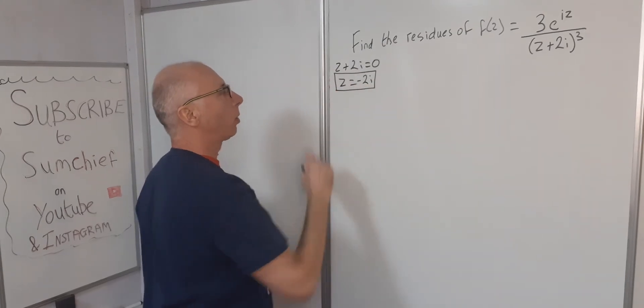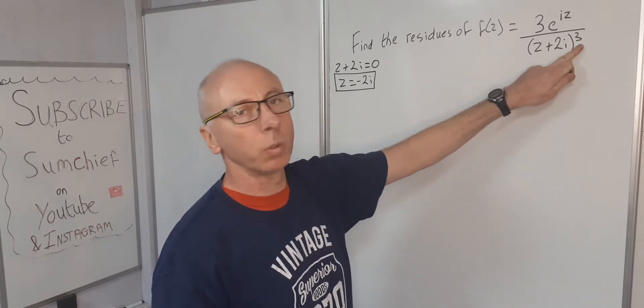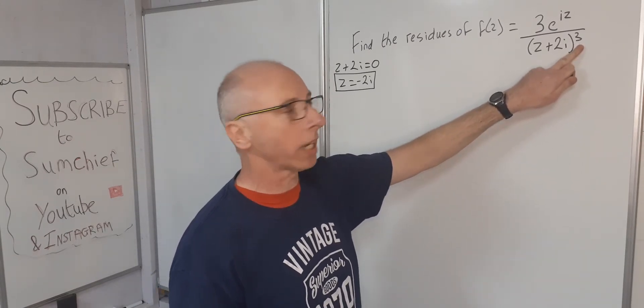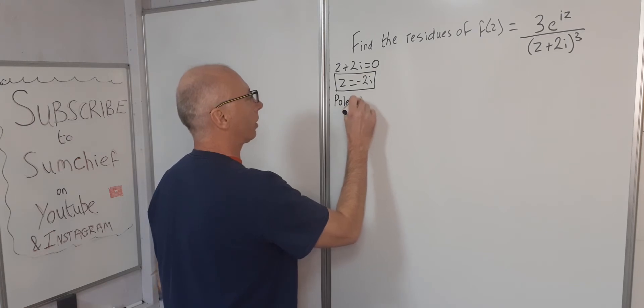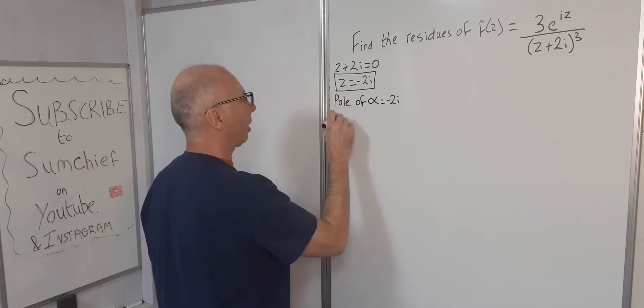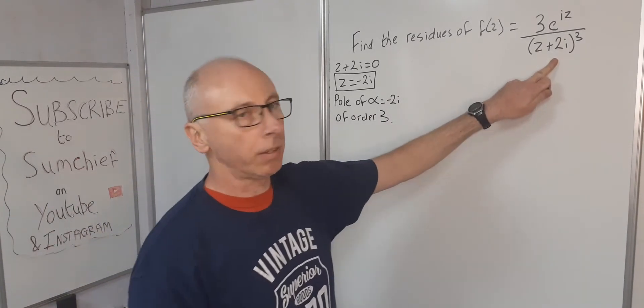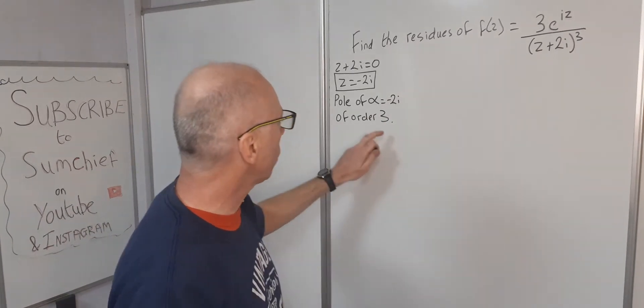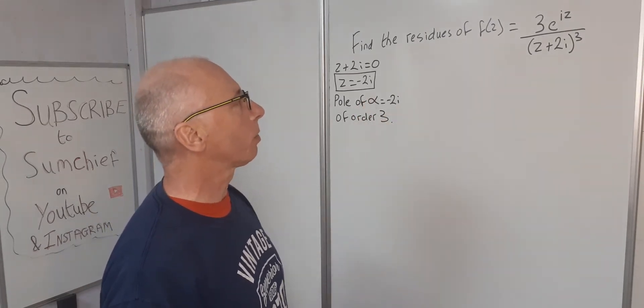So that's our pole and as we've got the cube there, the pole is of order 3 is what we say. So it's a pole at alpha equals -2i of order 3. This 3 is going to be important when we're trying to work out our residue of this function. That's going to come in really useful and obviously knowing where the pole is, -2i, we need that as well.